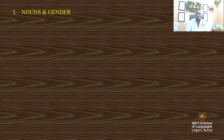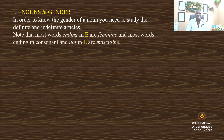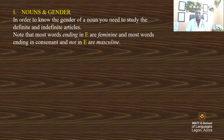Noun and gender. In order to know the gender of a noun, you need to study the definite and indefinite articles. Note that most words ending in E are feminine, and most words ending in consonants and not in E are masculine.